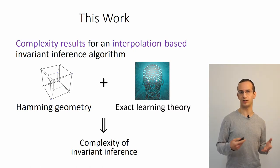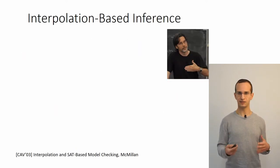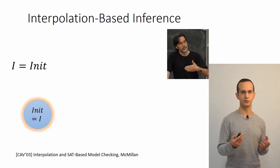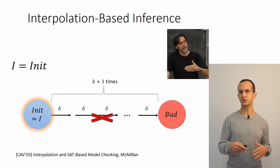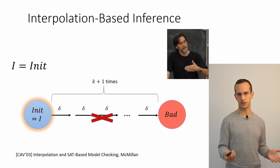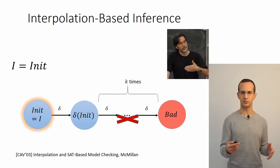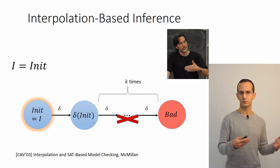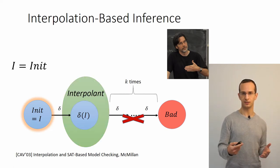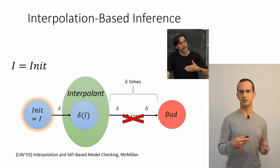The algorithm is an interpolation-based invariant inference algorithm. It starts with a candidate invariant that includes just the initial states and then performs bounded model checking, checking that from that candidate it's impossible to get to a bad state in k+1 steps. Once we know that, we know that the post image of the candidate—the states reachable in one step from the candidate—can't reach a bad state in at most k steps. The goal is to over-approximate this set while retaining the property that no state can reach a bad state in k steps.